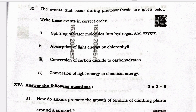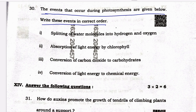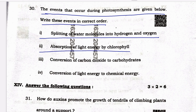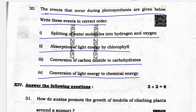Question 30: the events that occur during photosynthesis are given below — write these events in the correct order. The events are: (1) splitting of water molecules into hydrogen and oxygen; (2) absorption of light energy by chlorophyll; (3) conversion of carbon dioxide to carbohydrates; and (4) conversion of light energy to chemical energy. The correct sequence is: first, absorption of light energy by chlorophyll; next, conversion of light energy to chemical energy; then, splitting of water molecules into hydrogen and oxygen; and finally, conversion of carbon dioxide to carbohydrates.